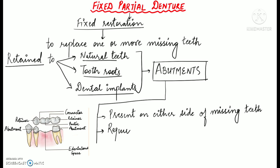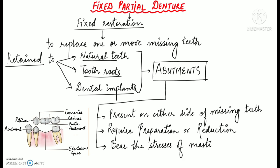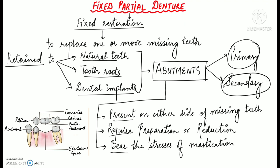The abutment teeth require preparation and reduction in order to support the prosthesis. In FPD, it is the abutments that bear the stress of mastication, and the choice of abutments definitely influences the prognosis of the treatment. Abutments can either be primary abutments — adjacent to the edentulous space — or secondary abutments, which are remote or away from the edentulous space. Every dental restoration must be able to withstand the constant occlusal forces to which it is subjected, and these abutments bear those forces, having a significant effect on the success of a restoration.